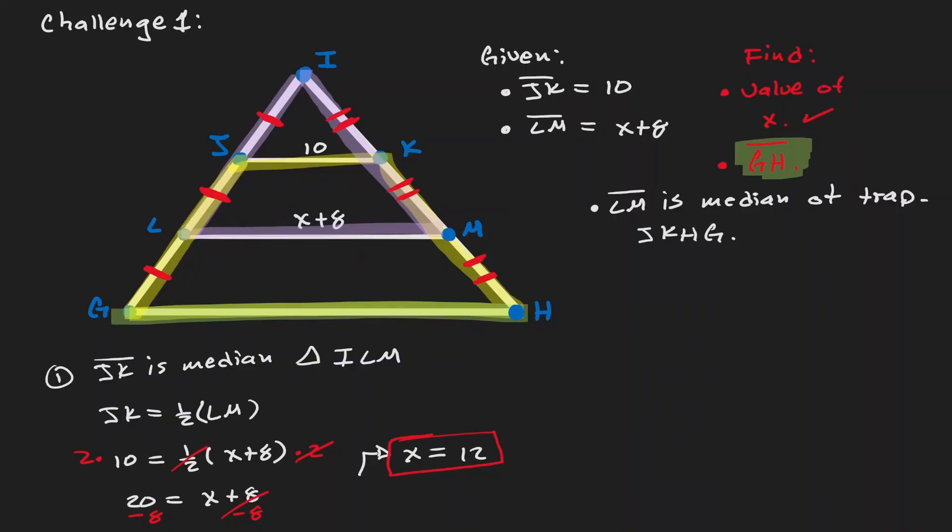Then we can apply properties of the trapezoid, where the median is half the addition of the bases. Now let's plug in what we know. LM is x plus 8. JK is 10. And GH is the unknown.